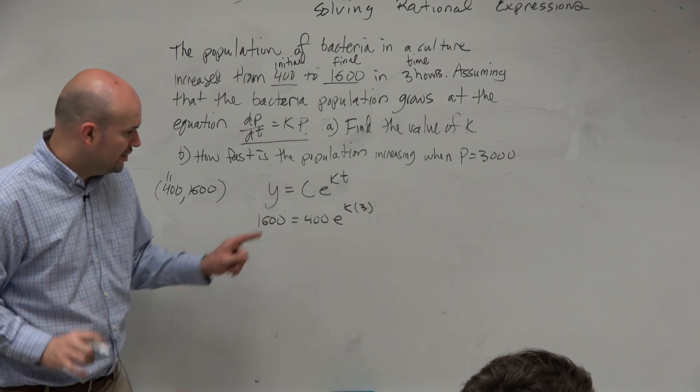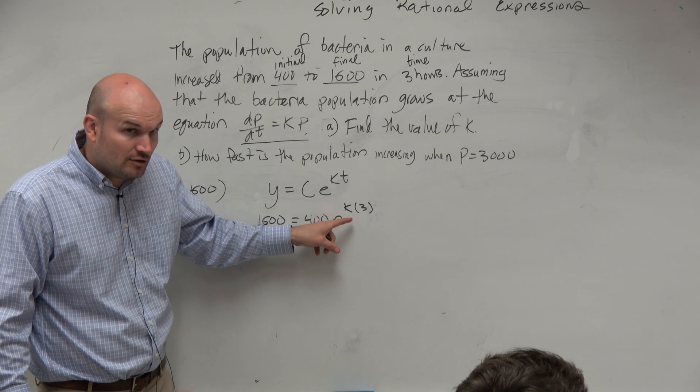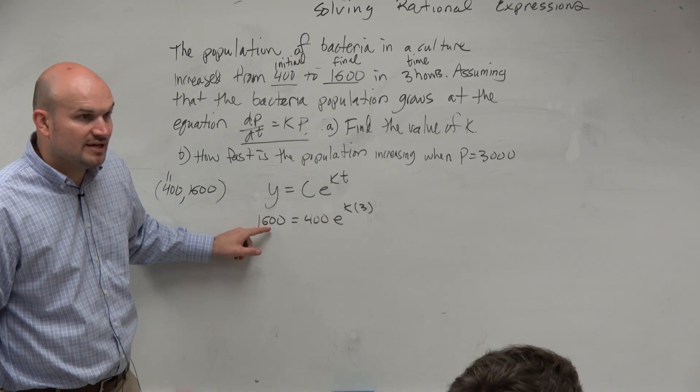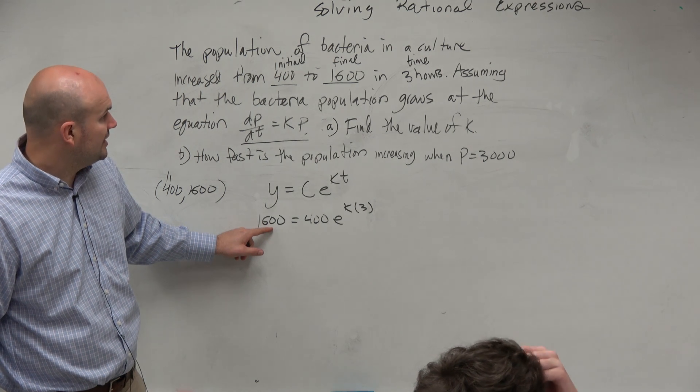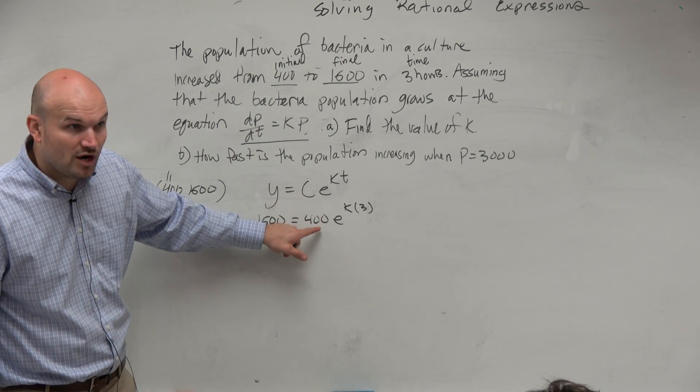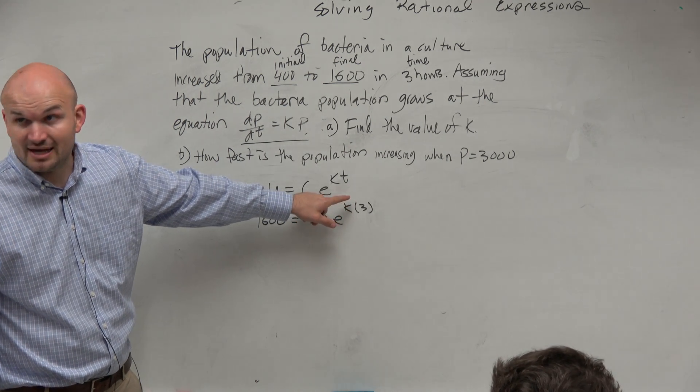Now again, let's look at this. You're putting in 400. We don't know how it's increasing. We don't know that k. We don't know the rate, but all we know is that it goes from 400 to 1,600, right? And doesn't that make sense? You plug in 400, and you get 1,600 in three hours. We just don't know what k is. So let's find k.